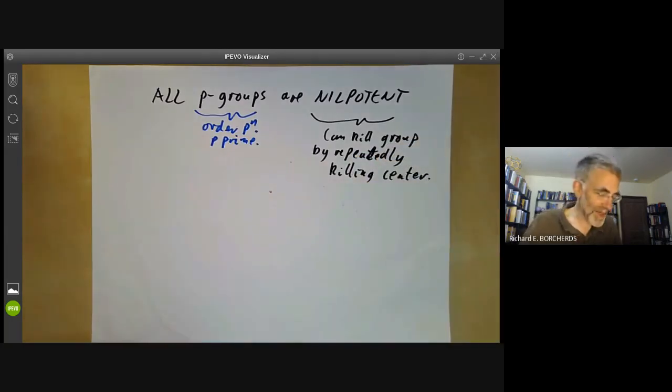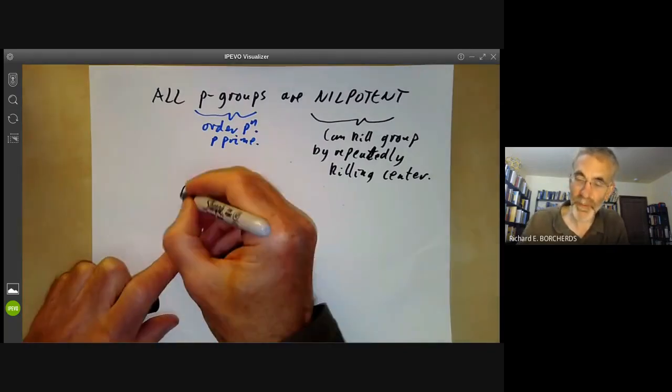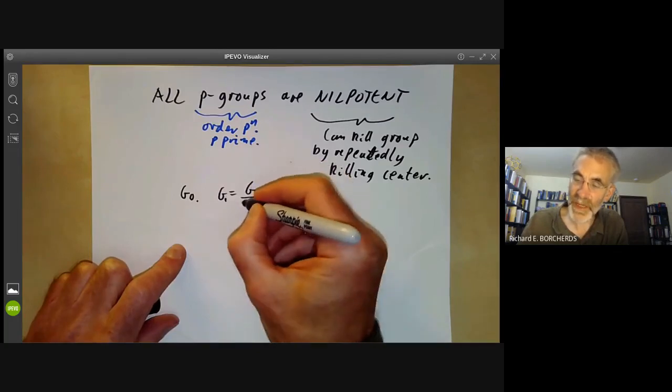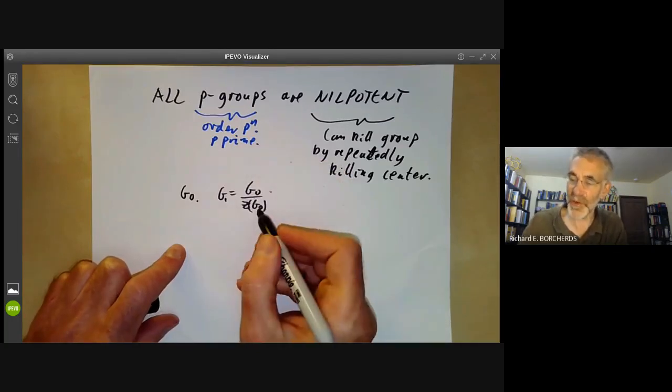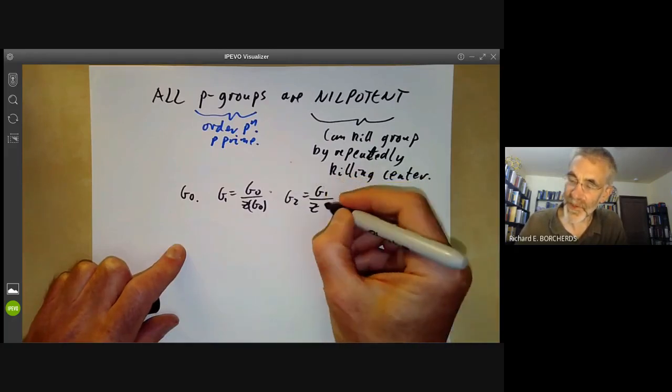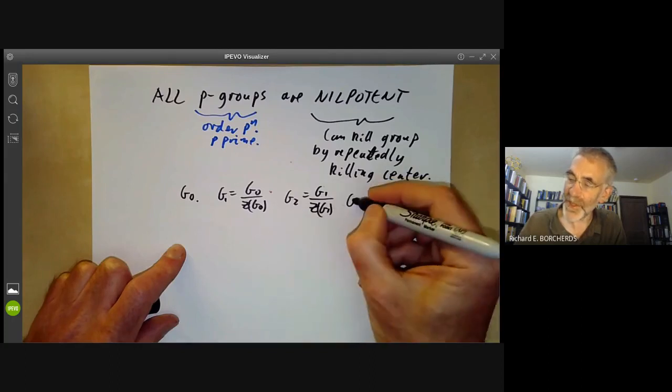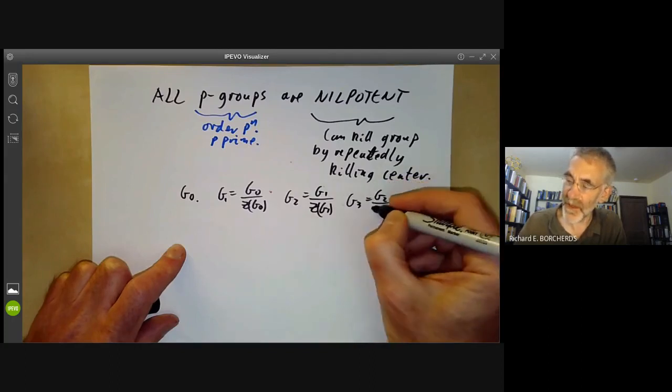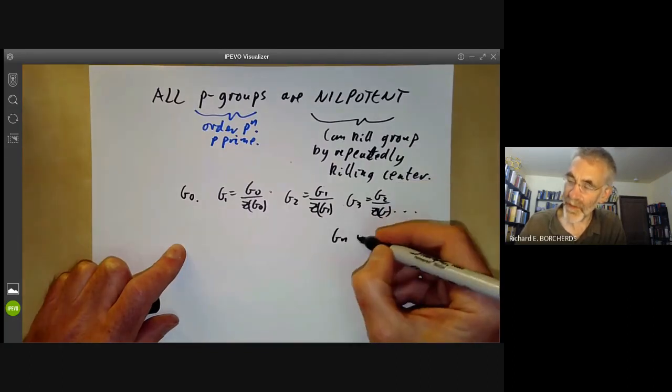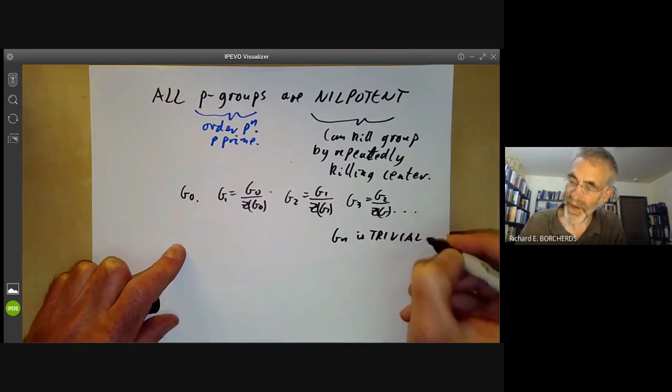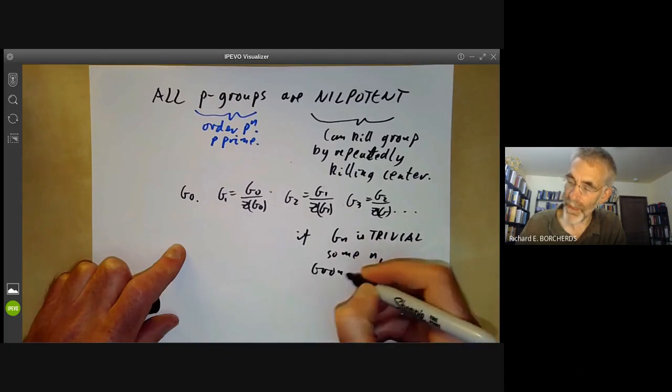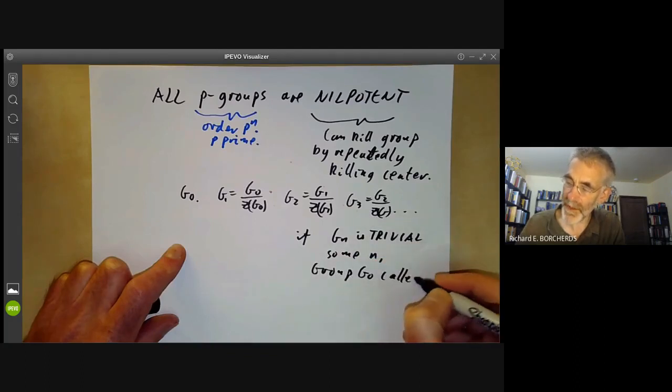So what this means is suppose I take a group G naught. Then I put G1 equals G naught modulo the centre of G naught. So I've killed off the centre of G naught. Then I put G2 equals G1 over the centre of G1. And then I put G3 equals G2 over the centre of G2 and so on. And if eventually Gn is trivial, so if Gn is trivial for some n, the group is called, so the group G naught is called nilpotent.